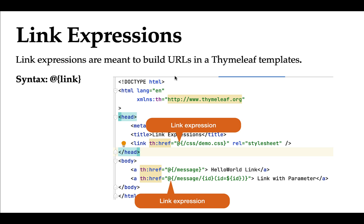Welcome back. In this lecture we'll take a look at Thymeleaf link expressions. Link expressions are meant to build URLs in Thymeleaf templates. The syntax uses the at-sign within curly braces, and we pass the link inside. We can use a link expression to pass a parameter in a URL, for example slash message slash id, passing the id dynamically. We can also use a link expression to point to an external CSS library, such as the css folder and demo.css file.